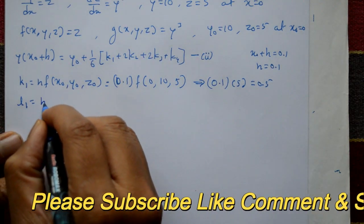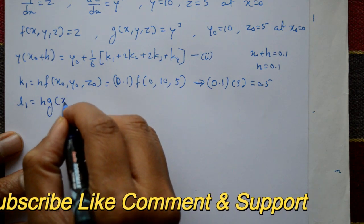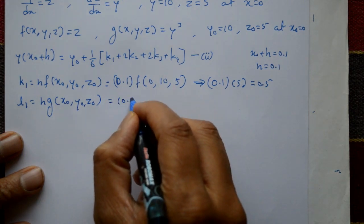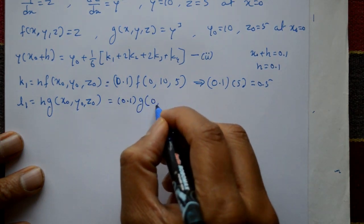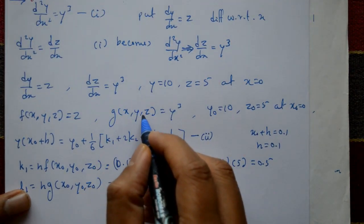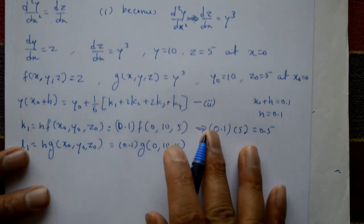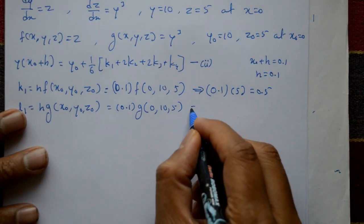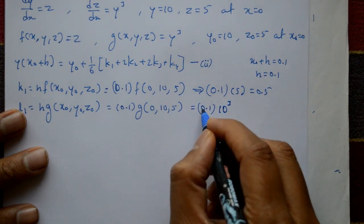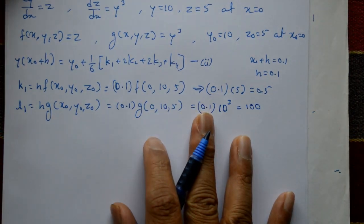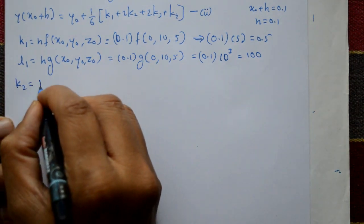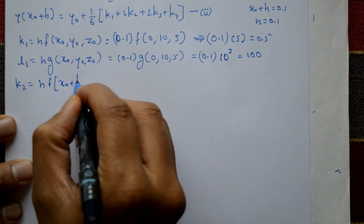l1 = h · g(x₀, y₀, z₀) = 0.1 into y³ = 0.1 × 10³ = 100. Next, k2 = h · f(x₀ + h/2, y₀ + k1/2, z₀ + l1/2).